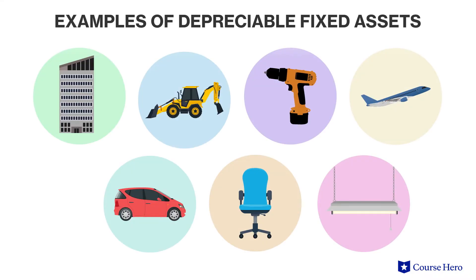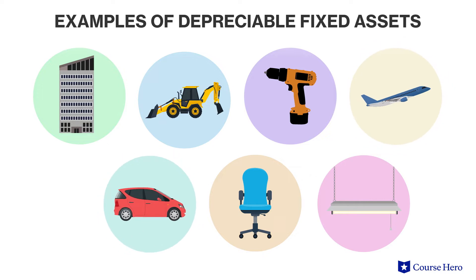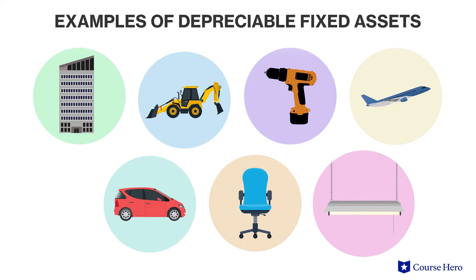Examples of depreciable fixed assets include buildings, machinery, equipment, vehicles such as aircraft and automobiles, and furniture and fixtures.